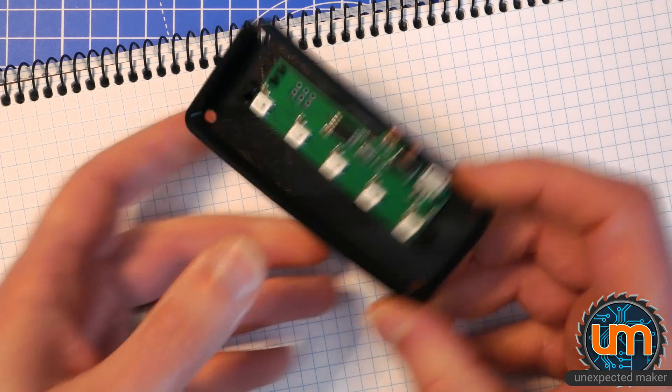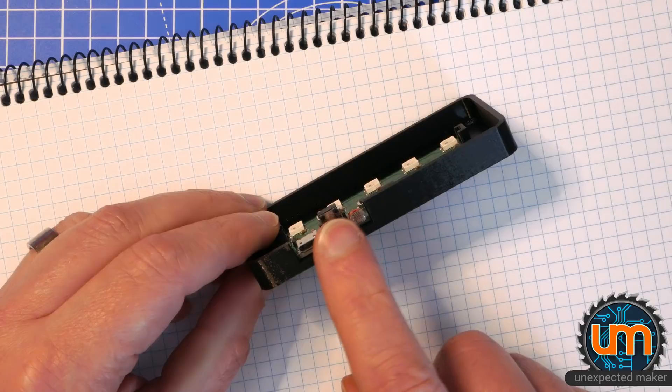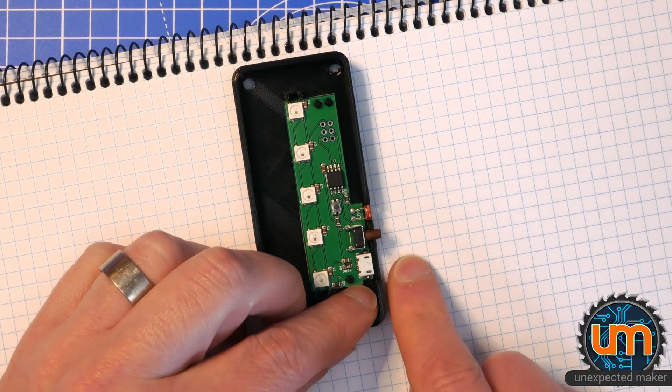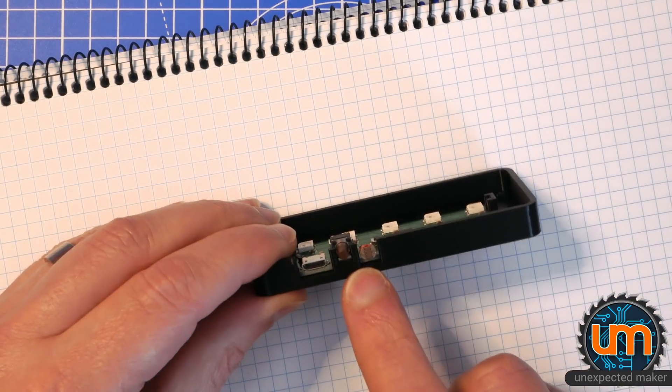As you can see we've got USB over here, we've got our button which sits quite nicely, sticks out about 2mm. That's perfect for pushing. And there's also a hole for the LDR.